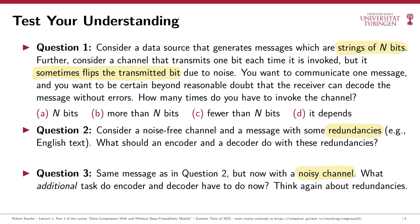Okay, so here's what I would have answered. For the first question, whenever there's an option that says 'it depends,' it's probably the right option, and indeed that's what I would answer here. We aren't told much about the data source or the communication channel — all we know is that we're tasked with lossless communication. On the one hand, the data source could be something that can be strongly compressed, like a text file, allowing us to reduce the number of bits to transmit. On the other hand, the communication channel could be very noisy, meaning we would have to add a lot of redundancies for error correction. So it really depends on the specifics.